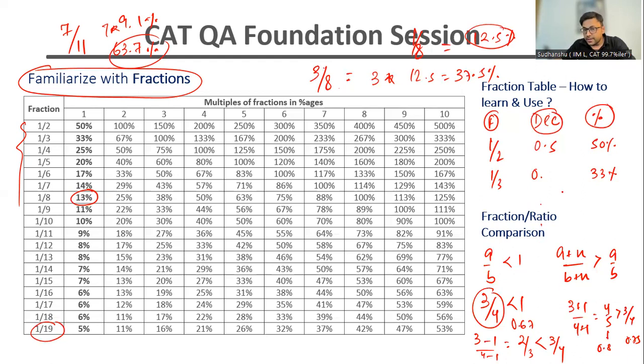On the opposite side, if you have a fraction which is greater than 1, then the opposite effect will take place. So if I add something to the numerator and denominator, in this case the fraction will reduce. Example: let's say 5 by 4. Fraction is greater than 1. I add plus 1 to the numerator and denominator, that becomes 6 by 5. 5 by 4 is 1.25 and 6 by 5 is 1.2. So you can see that the value reduces. So when the fraction is more than 1, add same number to the numerator and denominator, the value reduces.